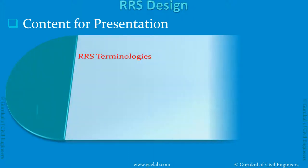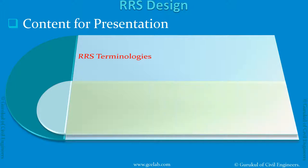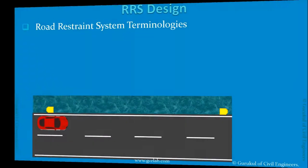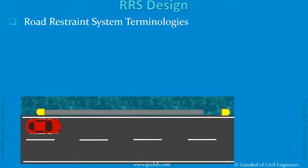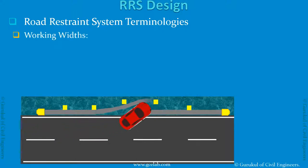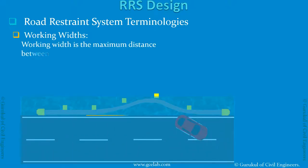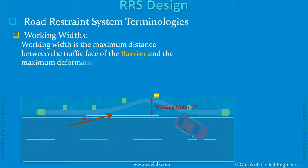In Road Restraint System terminologies, we will discuss Containment Levels, Working Width, Setback Distance, Length of Need, and Terminals. Working Width is the maximum distance between the traffic face of the barrier and the maximum deformation during the impact of the heavier vehicle.